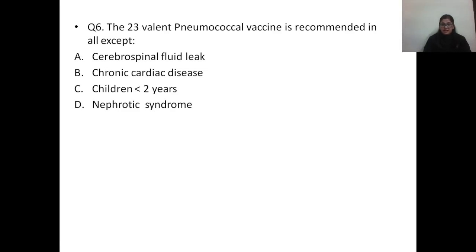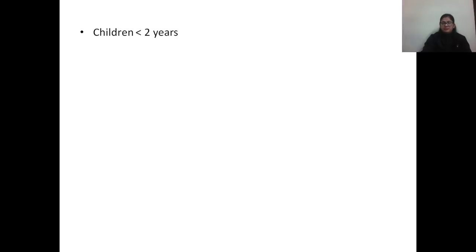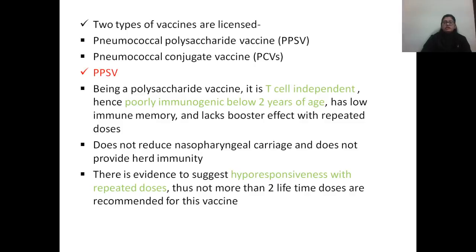Question number six: the 23-valent pneumococcal vaccine is recommended in all of the following except — A) cerebrospinal fluid leak, B) chronic cardiac disease, C) children less than two years of age, D) nephrotic syndrome. The correct answer is option C, children less than two years of age. Two types of pneumococcal vaccines are licensed: the pneumococcal polysaccharide vaccine and the pneumococcal conjugate vaccine.